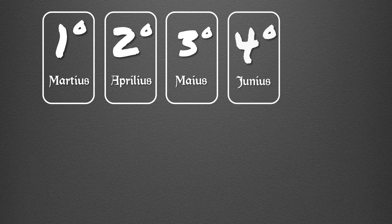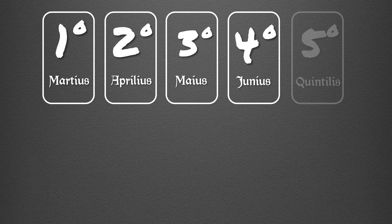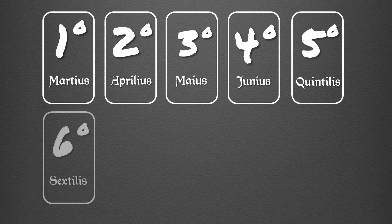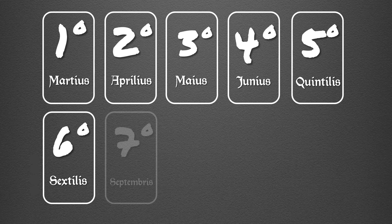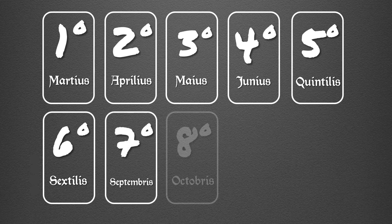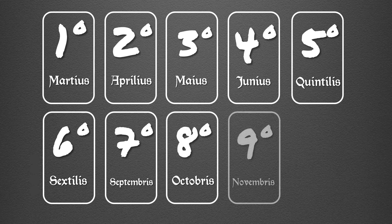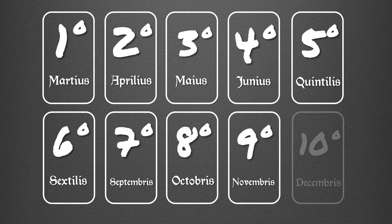Cuarto, Junias, en español Junio, Diosa Romana del Matrimonio, la Fertilidad y la Familia. El quinto mes, Quintilis. El sexto mes, Sextilis. El séptimo mes, Septembris. El octavo mes, Octobris. El noveno mes, Novembris. El décimo mes, Decembris.